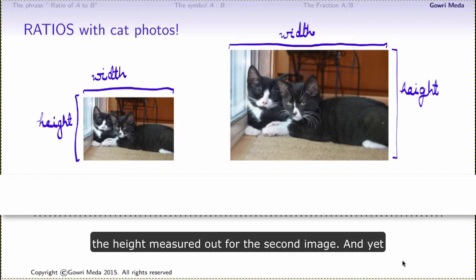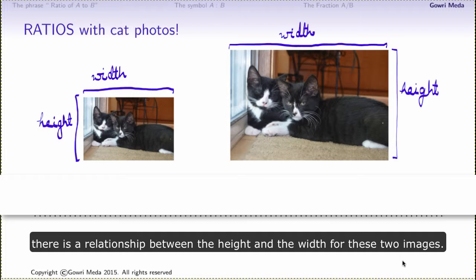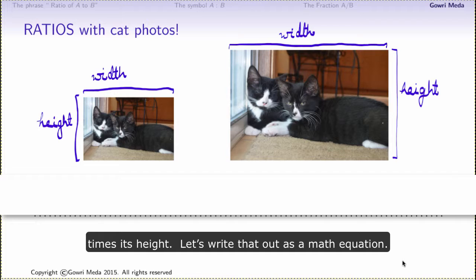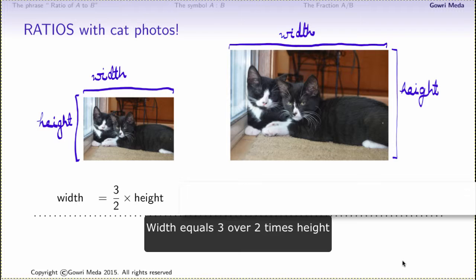Surely the width and height numbers of the first image would be different from the width and the height measured out for the second image. And yet there is a relationship between the height and the width for these two images. Since I enlarged the photos correctly, I can tell you that the width of each image is one and a half times its height.